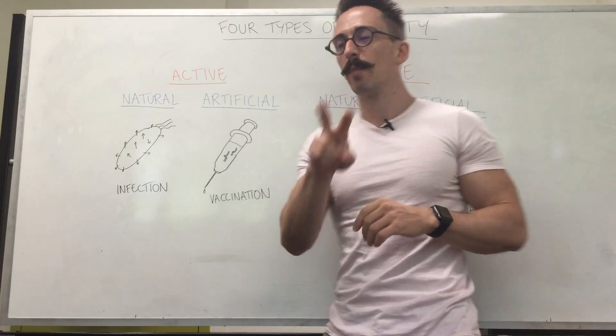If we look at the active processes for developing immunological memory, that means you yourself create the immunological memory. That means you make the antibodies against the pathogen. So let's have a look at the two different ways that you can make antibodies against pathogens. One is naturally acquired and the other is artificially acquired.